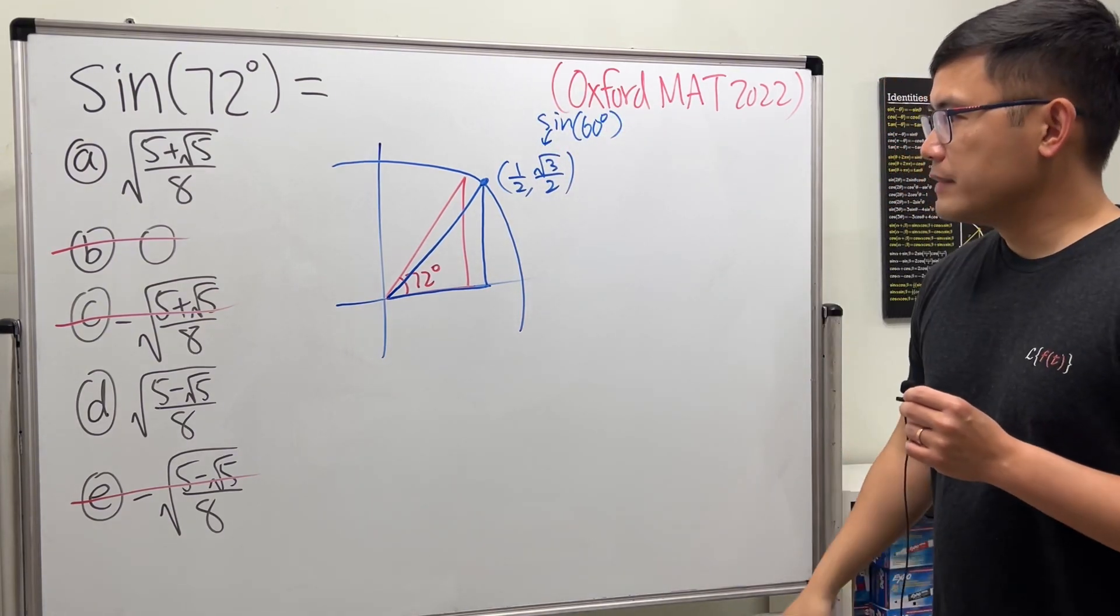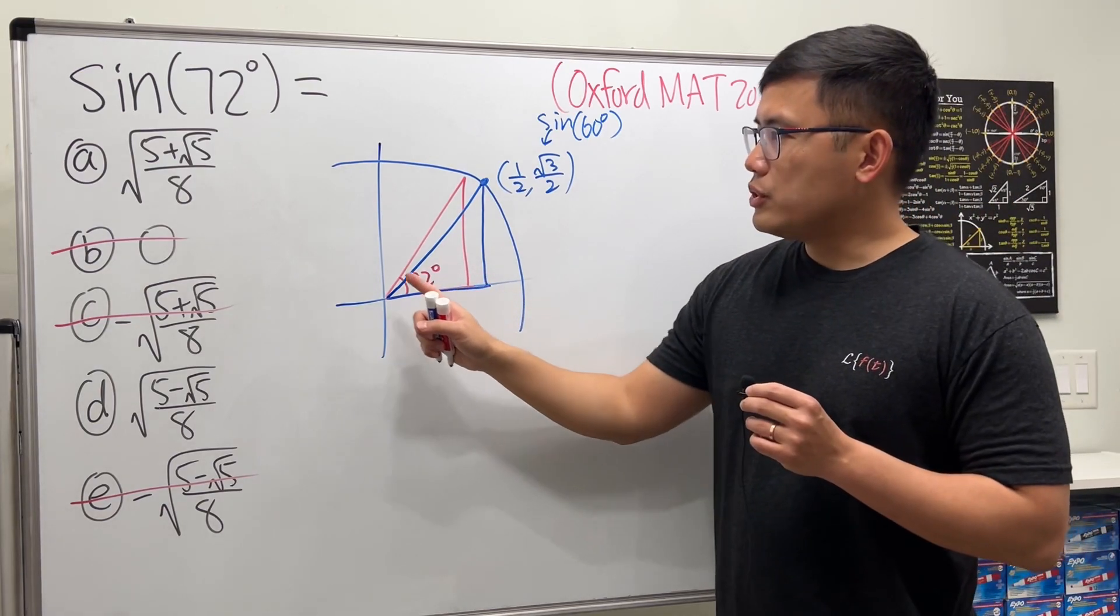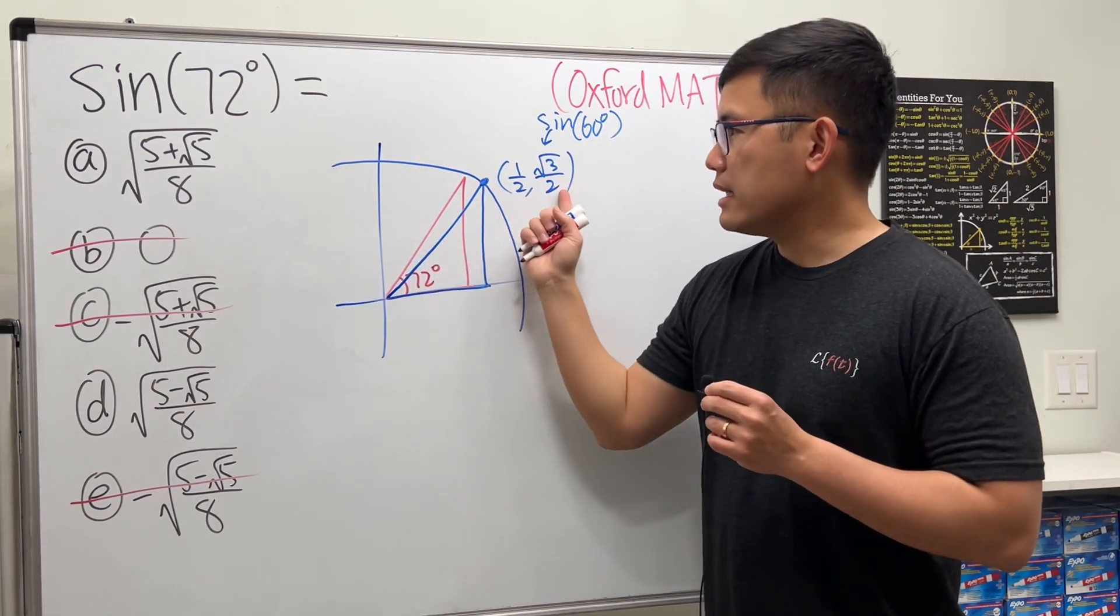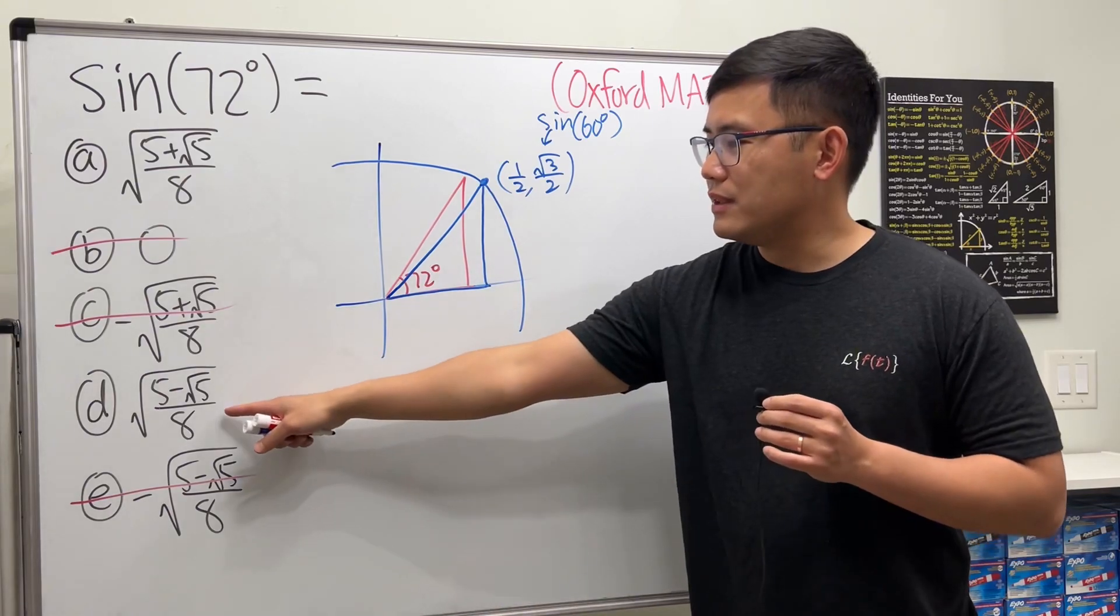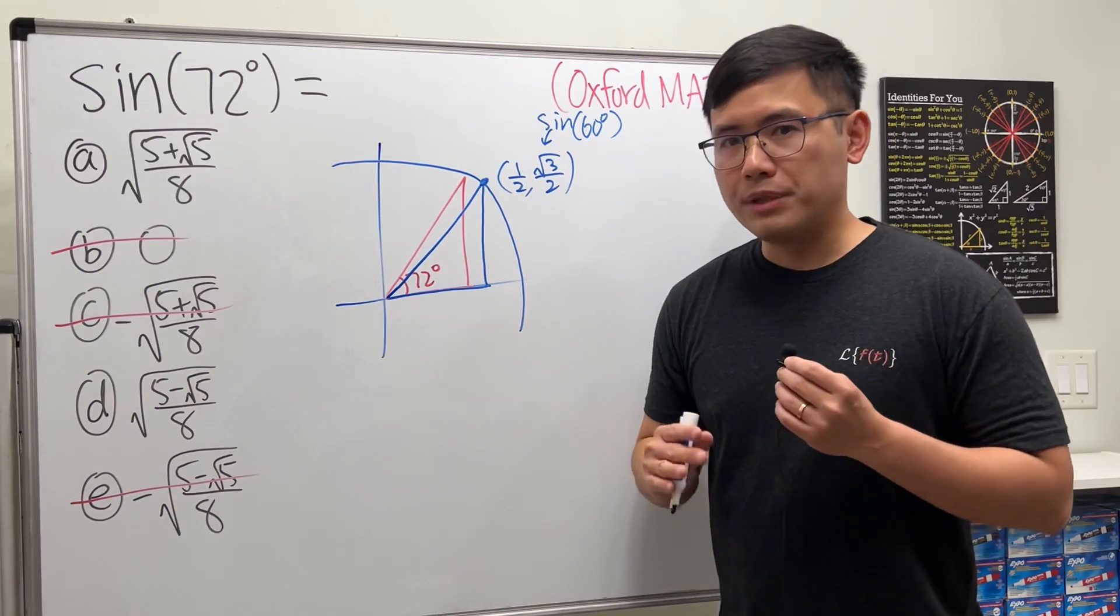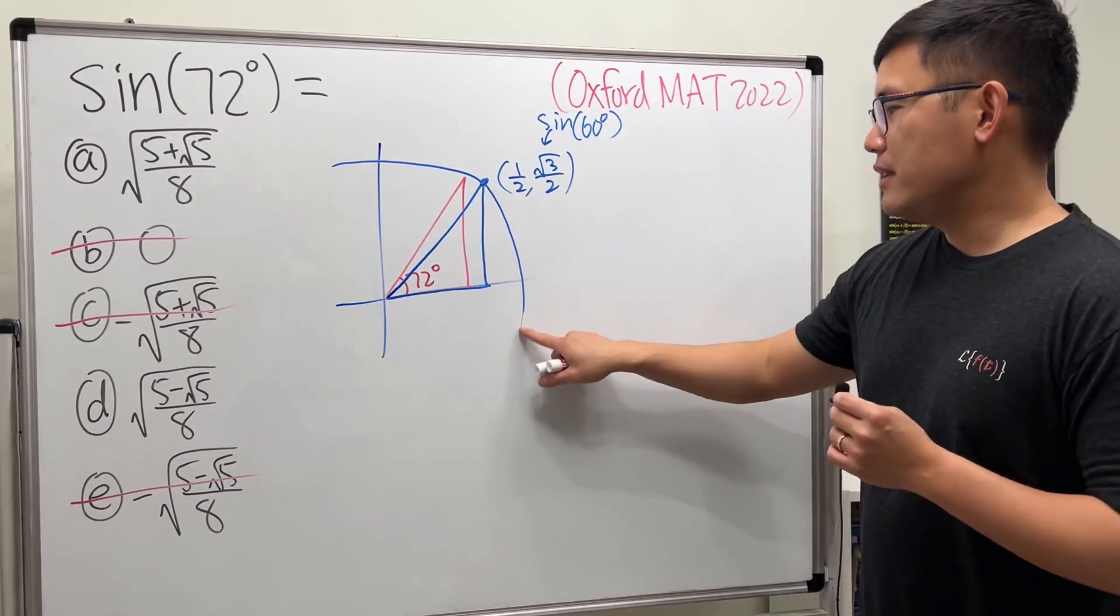√3/2. So I just have to show if this is bigger than that, then we are done. Or we can show that if this is less than that, we can also be done, depending on how you like to do it.